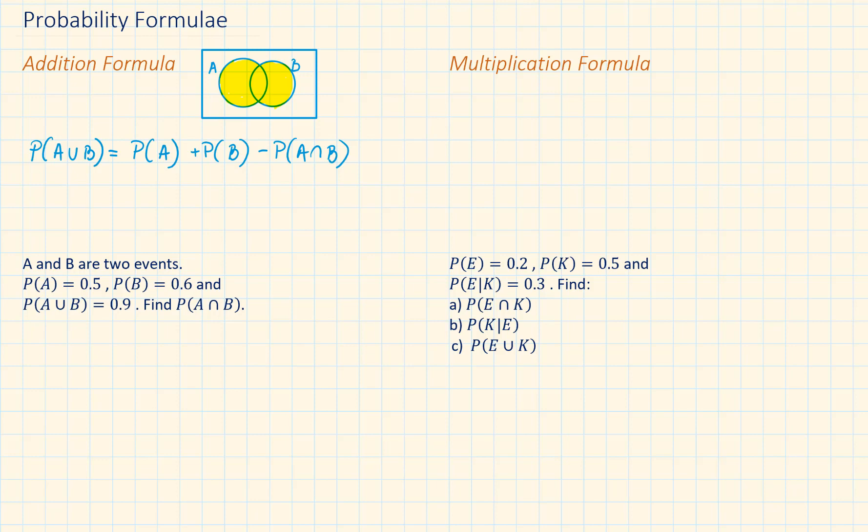If we would have more than one event, A, B, C, D and so on, the formula would apply the same way. It would be all their sums minus their intersection. But we will not cover this here.